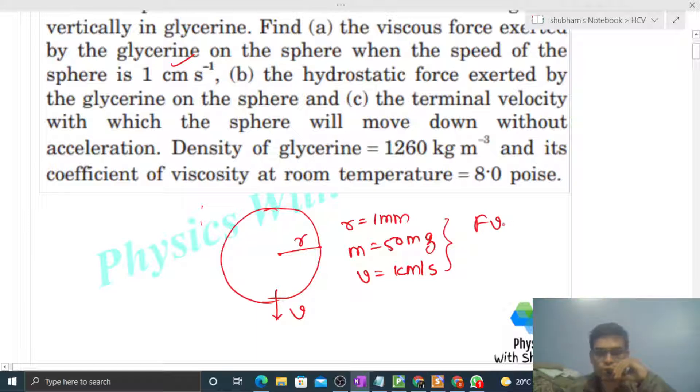At this particular instant, we have to find out the value of viscous force exerted by the glycerin on this metal sphere. The viscous force opposes the relative motion of the sphere, so its direction is opposite to the motion - upward. The magnitude is 6πηvr.